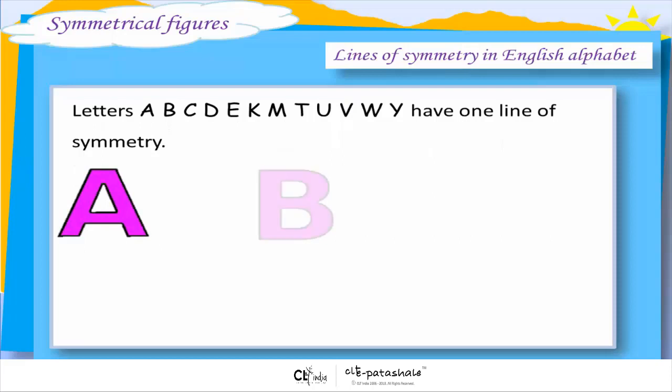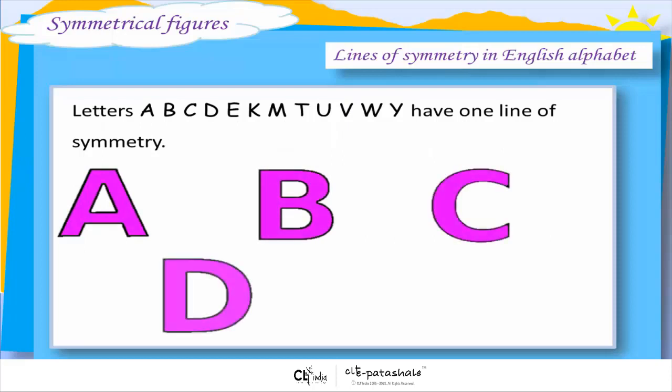Letters A, B, C, D, E, K, M, T, U, V, W, Y have one line of symmetry.